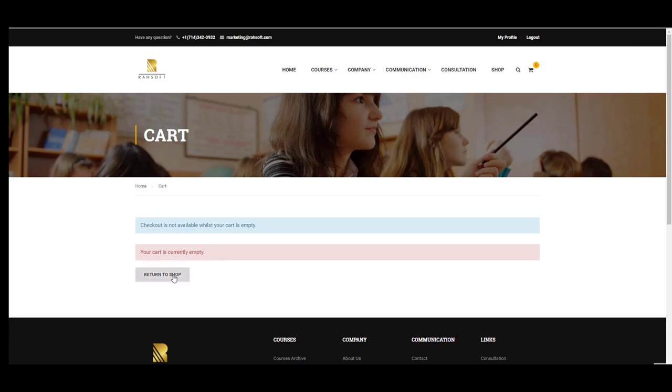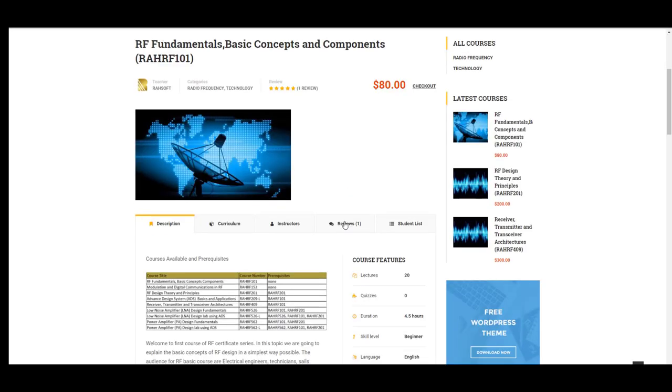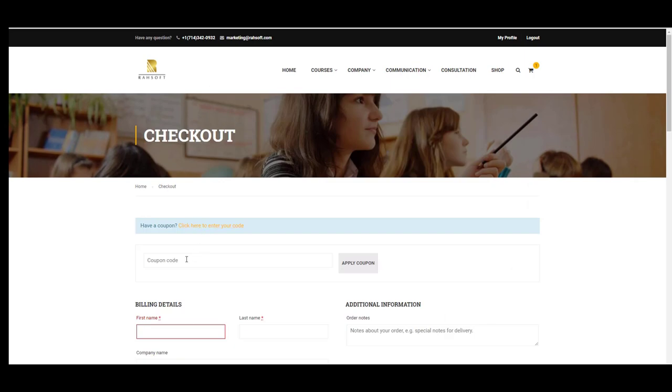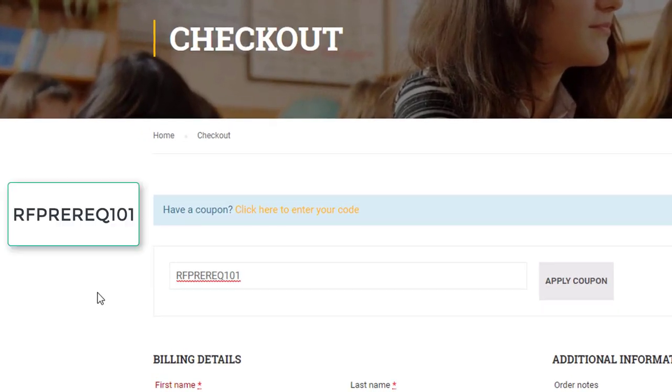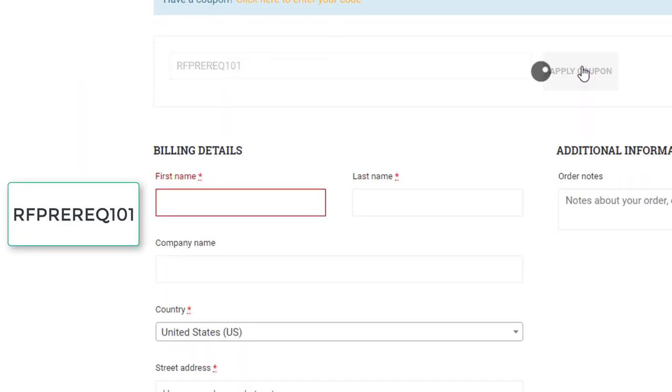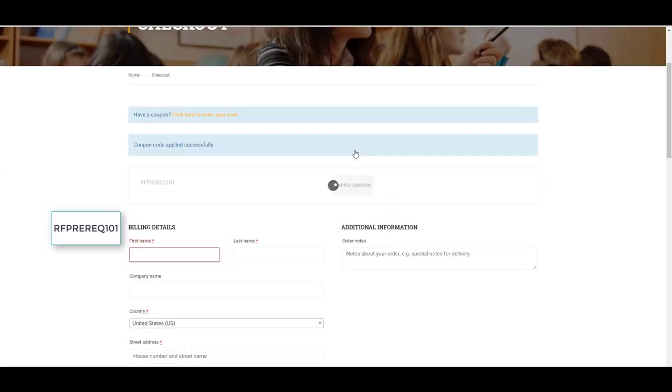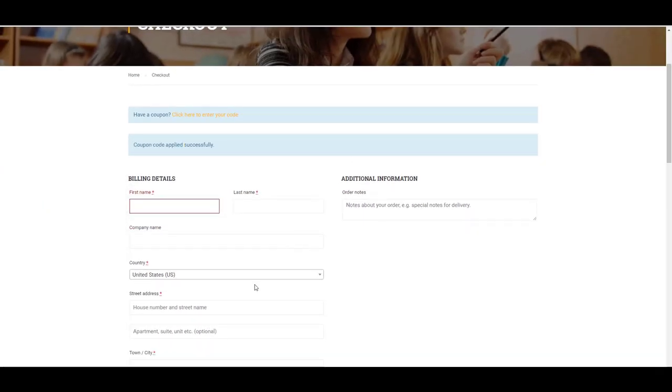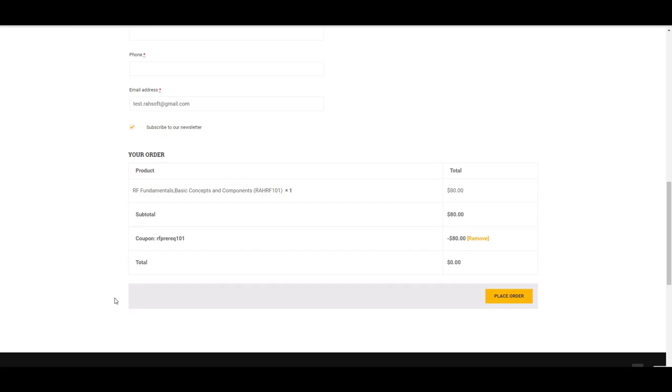After that, all you need to do is go to the course landing page and go to check out. As you see, click to enter your code. You can put the coupon code here and then apply the coupon. Then you will have this course for free and you can take this course.